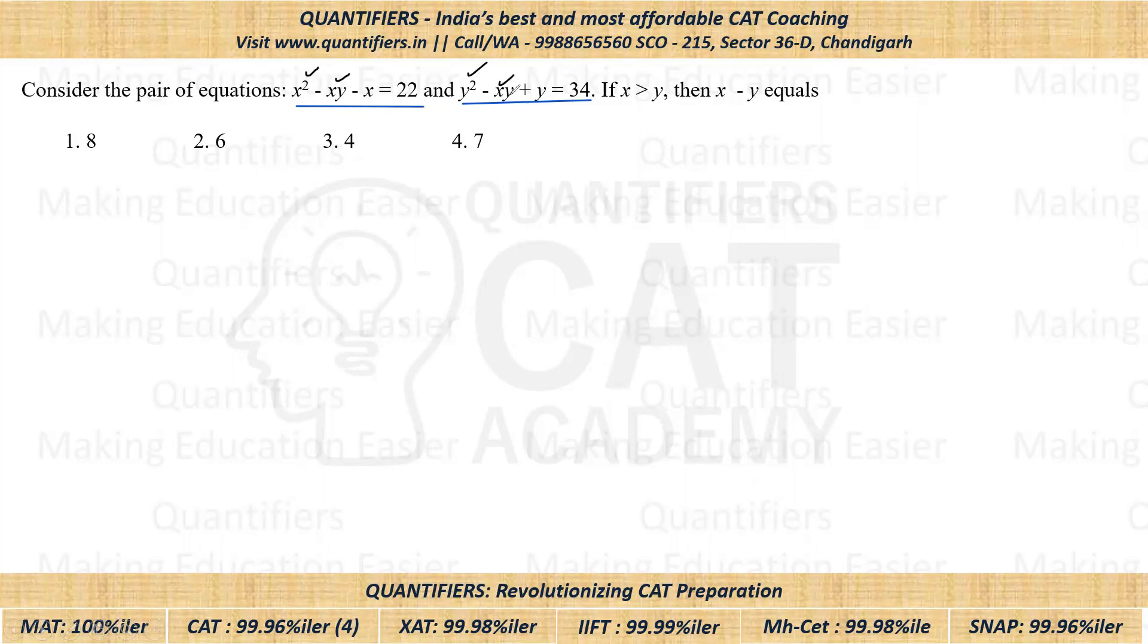Now see on adding, we are getting X² + Y² and negative of 2XY. That is nothing but (X - Y)². So it is better to add the two equations.